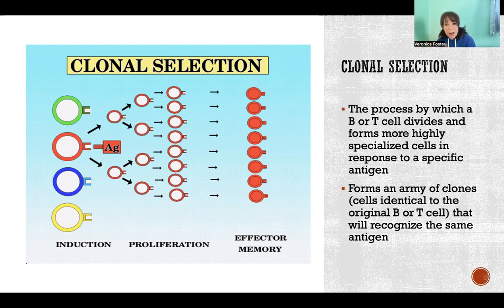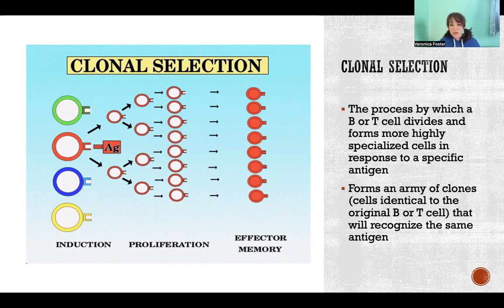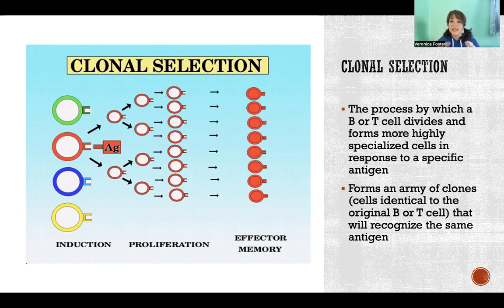Those copy cells, those clones, are not going to be naive cells. They're not blank slates — those are only produced by the red bone marrow. But these are clones of that original cell. So now we have an entire army of cells that are targeting that specific pathogen that that B or T cell just encountered.